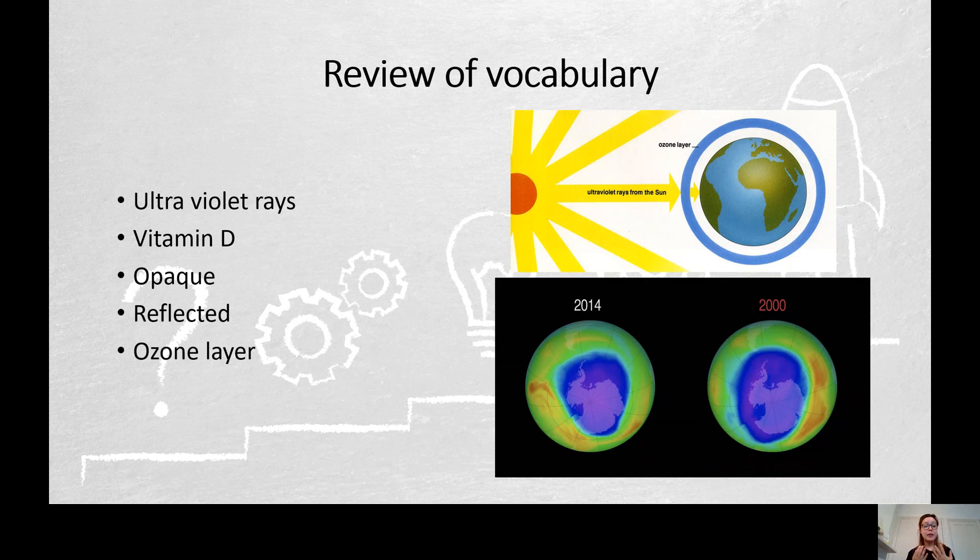Opaque. When something is opaque, when a material is opaque, it is the opposite of transparent which means you can't see through it. Light doesn't go through it. So for example if you have really murky, dark, dirty water, that water is opaque. We're going to be learning more about which materials are opaque and which materials are transparent.